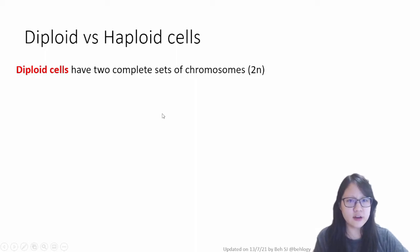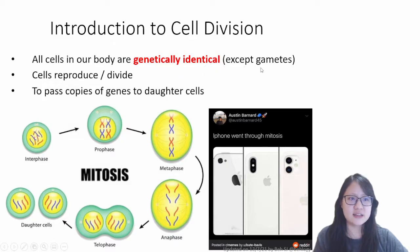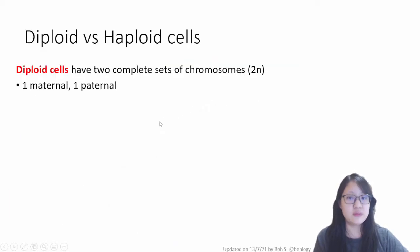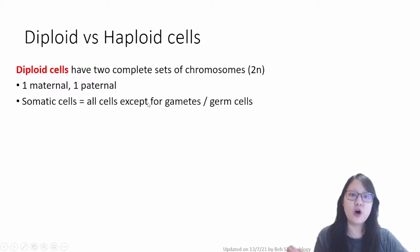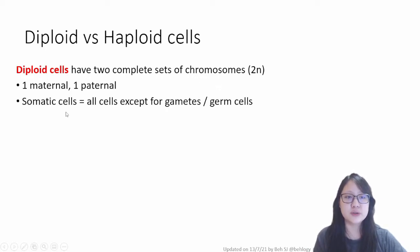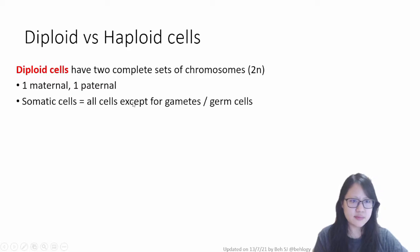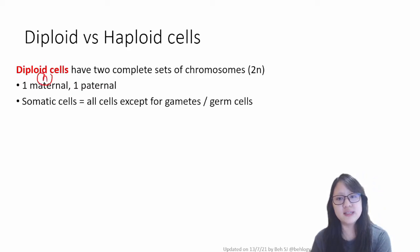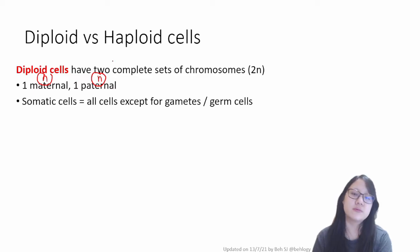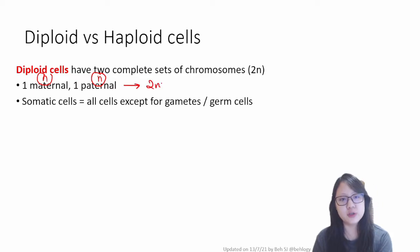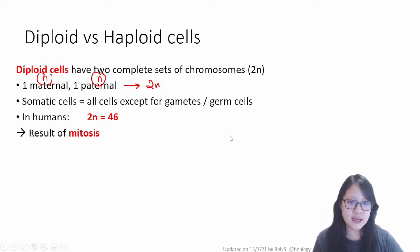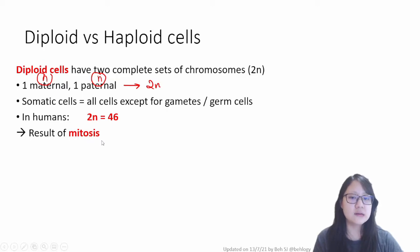Most of our cells are genetically identical except gametes. Our normal cells, our somatic cells — which are all cells except for gametes — are diploid. Diploid cells have two sets of chromosomes: one set from your mom and one set from your dad, which forms you — 2n — diploid organisms. In humans our diploid number is 46, and all these somatic cells are formed as a result of mitosis.